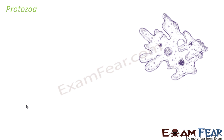We now reach the last group of Protista, which is Protozoa. Protozoa are the animal-like protests. They have many close resemblances with animals and are considered to be the first animals. So far we discussed Monera, which included all bacteria — unicellular prokaryotes. Then we came to Protista, covering many different groups. Now in the Protozoa group, for the first time we are seeing animal-like protests.